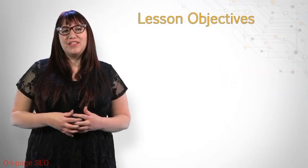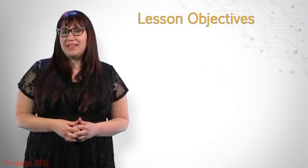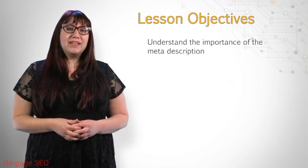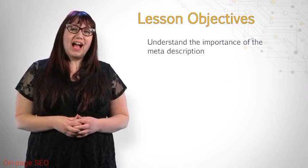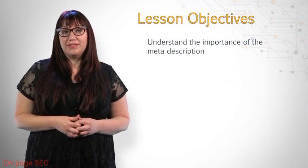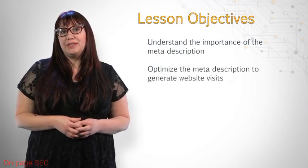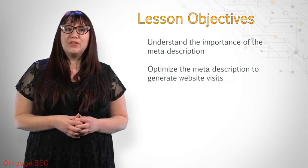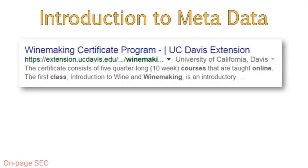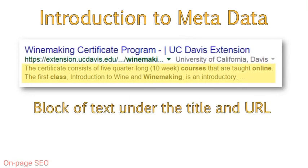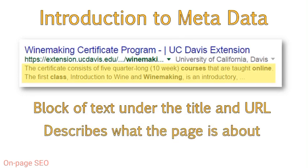Now that you understand the title tag, we'll move on to another meta tag: the meta description. Since meta description keywords don't help a site rank, this can be overlooked in SEO, but we'll look at how this can be used to direct website traffic. Once you fully understand the purpose of the meta description, you'll see how to best use it for an on-page optimization strategy. As a refresher, the meta description is the block of text under the title and URL — this block of text describes what the page is about. It is also important to know how to locate the meta description when you are viewing the site, and I will provide a quick demonstration.